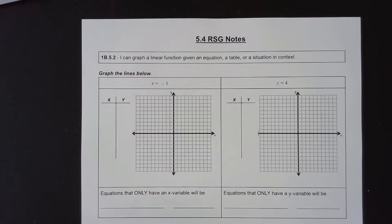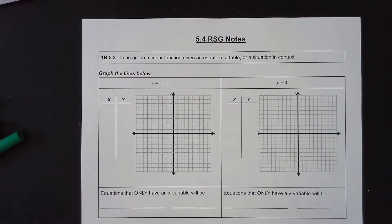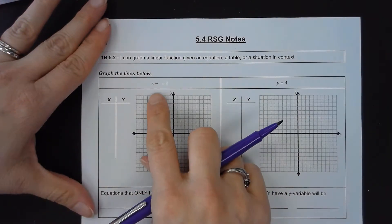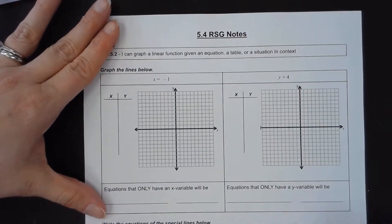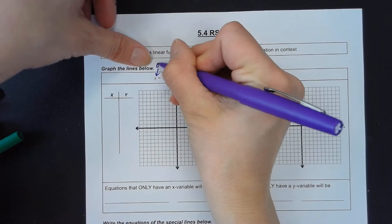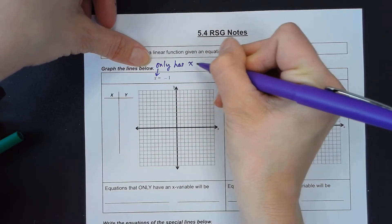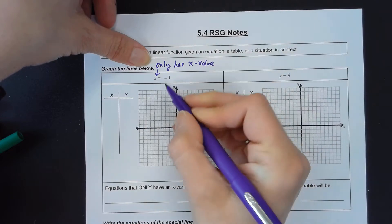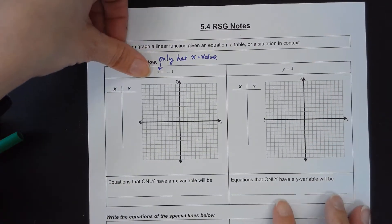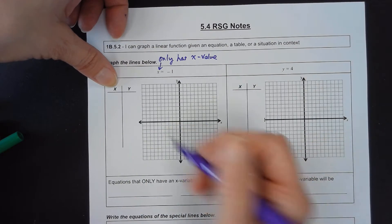Hi class, this is going to be a one-page video. The notes here are going to talk about how to graph a function from a table, except you can see how a lot of these equations only have one letter. This equation here only has an x variable, so something unusual is going to happen. Let's go ahead and make some points — we're going to graph with a table.